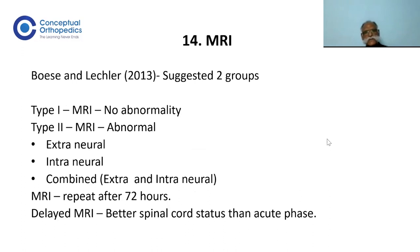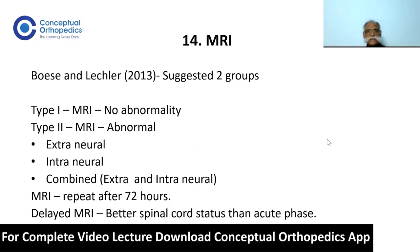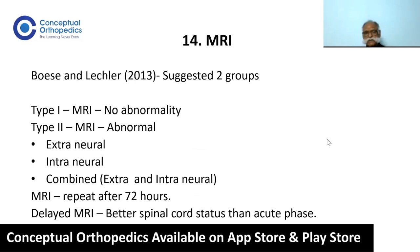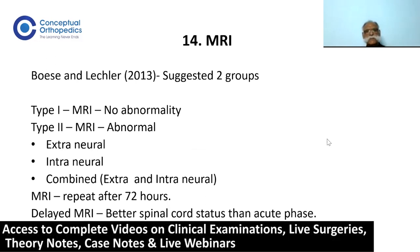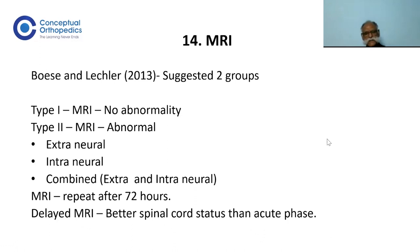Bose and Lesher suggested two groups based on MRI findings. Type 1 shows no signal changes and no abnormalities. Type 2 shows signal changes with abnormalities in the extra-neural region, intraneural region, or a mixed combination of both. It is recommended that MRI be repeated after 72 hours, as a delayed MRI better reflects the biological health of the cord compared to imaging in the acute phase.